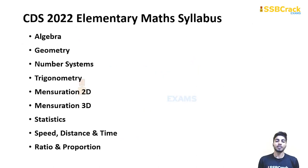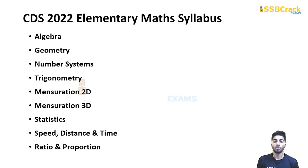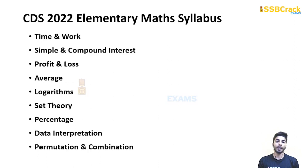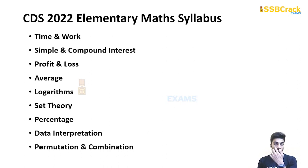Let's see the elementary math syllabus. The topics are: Algebra, Geometry, Number Systems, Trigonometry, Mensuration 2D, Mensuration 3D, Statistics, Speed Distance Time, Ratio and Proportion, Time and Work, Simple and Compound Interest, Profit and Loss, Average, Logarithms, Set Theory, Percentage, Data Interpretation, and Permutation and Combination. These are all the topics of CDS maths.